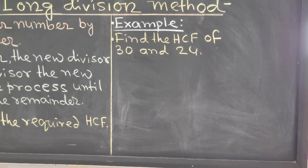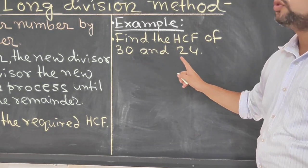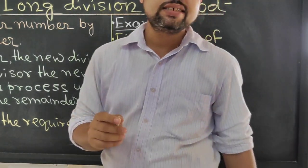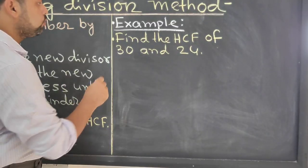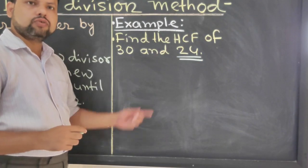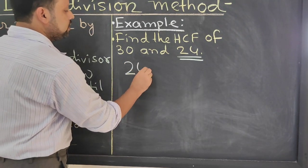In our example, 30 and 24. We have to find the HCF of 30 and 24. So which one is smaller? 24 is the smaller number. 24 is smaller than 30. So, divide this.